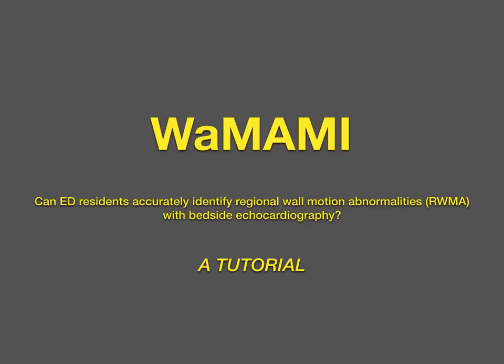So first of all, what are our wall motion abnormalities? We're looking for things like akinesis, which is lack of movement in the wall, and dyskinesis, which is paradoxical movement of the wall. If you're having trouble — some of these images can be difficult to tell with a lot of things moving around — another thing you can always look for is whether the wall itself is thickening, which is indicative of contraction.